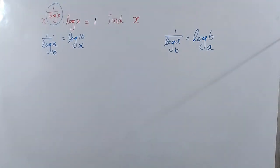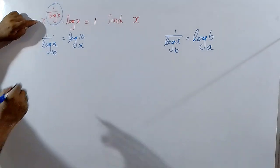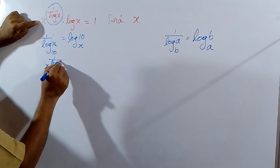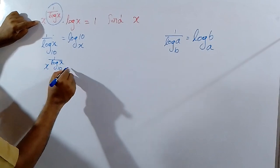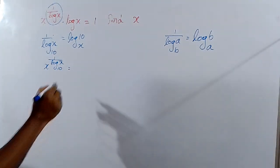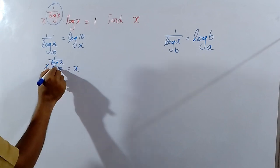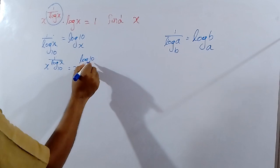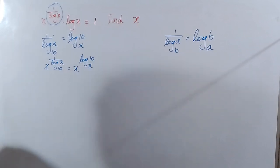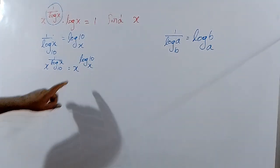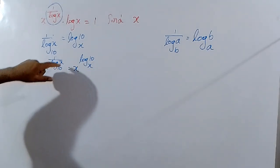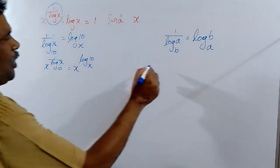So this is log 10 base x. Now, x power 1 by log x base 10. Now, x power 1 by log x base 10 by using this formula, log 10 base x equal to this formula. x power log 10 base x equal to this. Now we can calculate it.